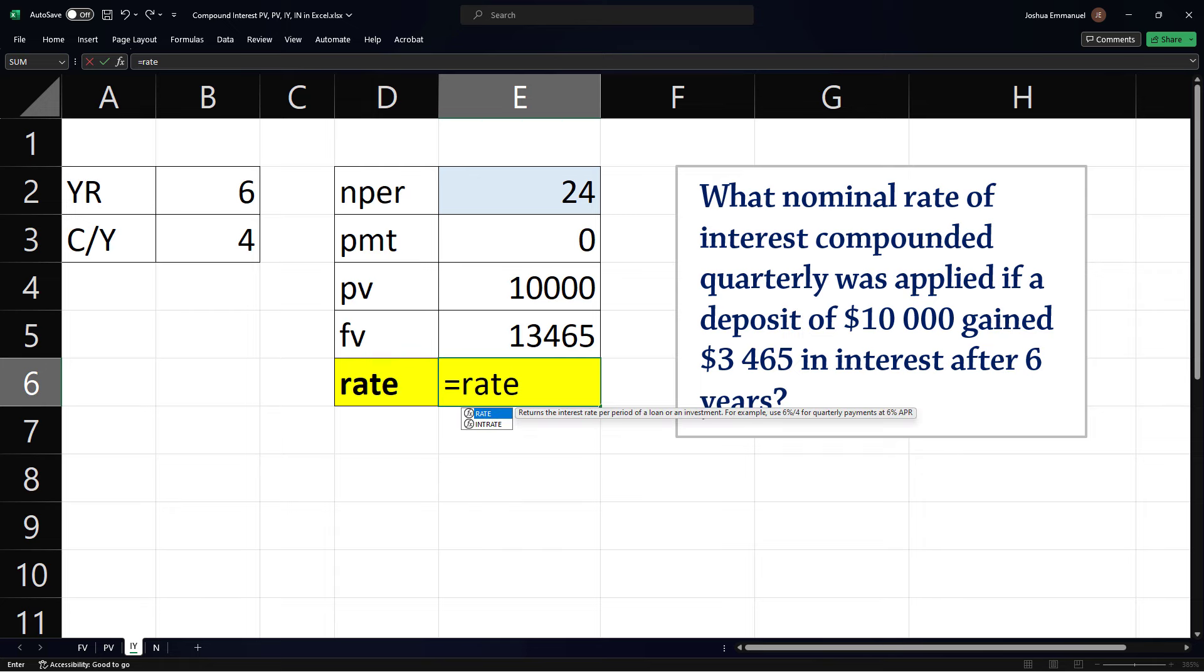To calculate the periodic interest rate, type equals rate, tab, number of periods, comma, payment, comma, present value, comma, and future value. Enter. It gives an error message indicating we entered an invalid number. This is because present value and future value cannot both be positive since money is going in and out. One of them must be negative. So if I make future value negative,